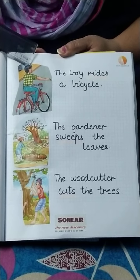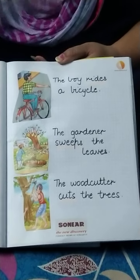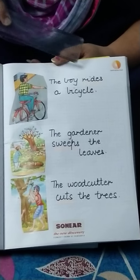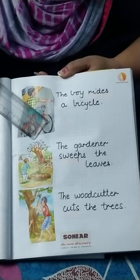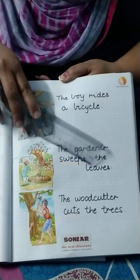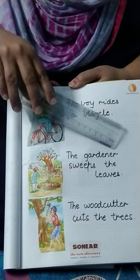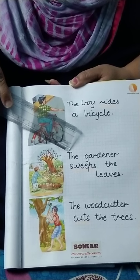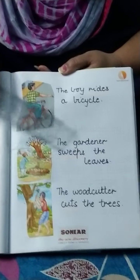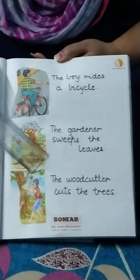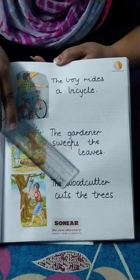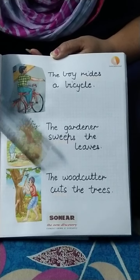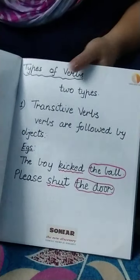Let me show you some picture examples to make it more clear. In the first picture, the boy rides a bicycle — the word 'rides' is a verb. In the second picture, the gardener sweeps the leaves — the word 'sweeps' is the action the gardener is doing, so 'sweeps' is a verb. In the third picture, the woodcutter cuts the trees — the action done by the woodcutter is cutting, so the word 'cuts' is the verb in that sentence.